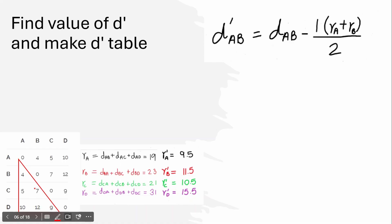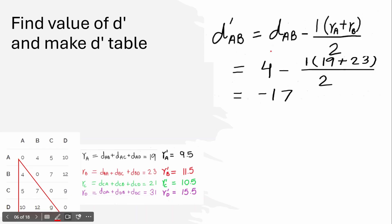Our next step is to find the D' (D dash) values. Since the D table has 6 values, we will find 6 D' values and make a D' table. For D'_AB, we take the D_AB value of 4, subtract R_A' and R_B', and we get minus 17 for D'_AB. Similarly, we find D' values for AC and all the other pairs to complete the table.